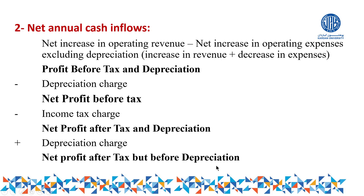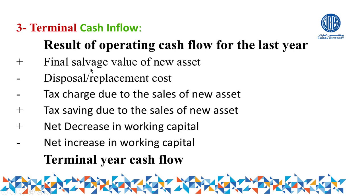Net profit after tax but before depreciation is the figure needed to evaluate the project's profitability. Other cash expenses such as rent and salaries are paid out, but depreciation remains in the business. That is why we add it back to arrive at the actual cash available — the operating cash flow used for project evaluation.